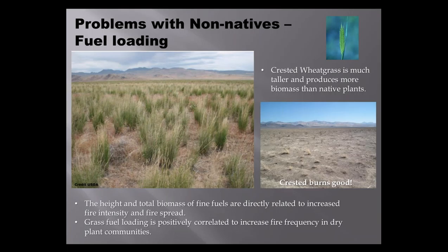The next problem with non-natives is fuel loading. A photo of a mature crested wheatgrass stand tells it all — crested wheatgrass is often described as 'wolfy,' getting very tall after establishment and producing a lot more biomass than many native plants in the Great Basin. We know that the height and total biomass of fine fuels are directly related to increased fire intensity and fire spread, and that grass fuel loading is positively correlated to increased fire frequency, especially in arid landscapes. Forage kochia has less of an effect on fuel loading — I want to give you both sides.